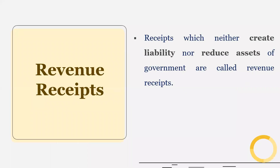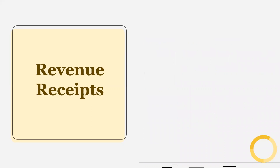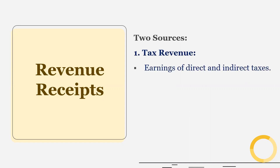Now, what do we mean by revenue receipts? Receipts which neither create liability nor reduce assets of the government are called revenue receipts. The government receives them in the normal course of activities. The first source is tax revenue — the earnings of direct and indirect taxes. Earnings of direct and indirect taxes neither create liability nor reduce the assets of the government.